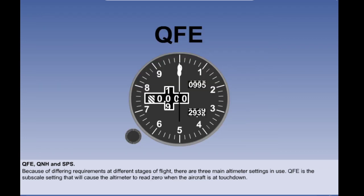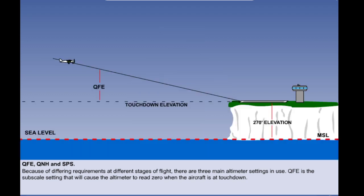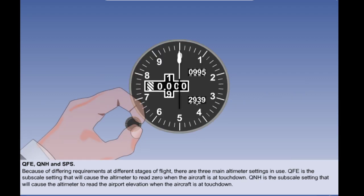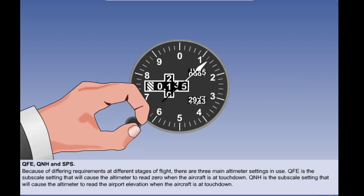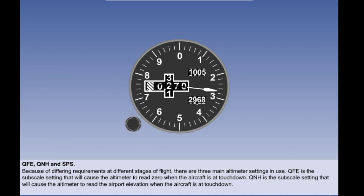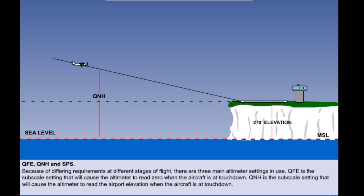QFE is defined as the atmospheric pressure at the aerodrome elevation. It is the subscale setting that will cause the altimeter to read zero when the aircraft is on the ground. Zero datum is the airport elevation, not sea level. Effectively, this gives the pilot his height above touchdown. QNH is the subscale setting that will cause the altimeter to read the airport elevation when the aircraft is at touchdown. Broadly, it gives a pilot his altitude above mean sea level, but this is not the correct definition because of the possibility of temperature errors.